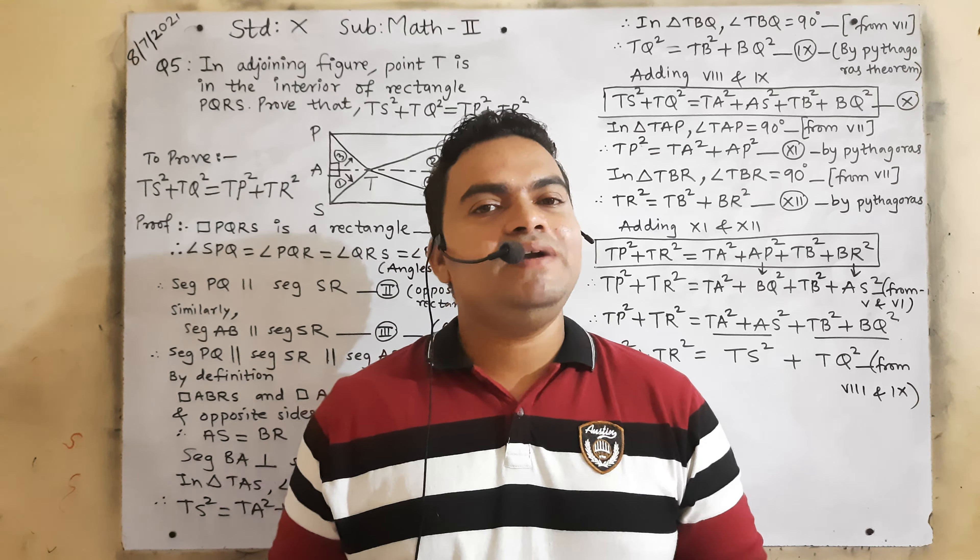Since PQRS is a rectangle, ABQP is also a rectangle and ABRS is also a rectangle. AB is perpendicular on segment PS — so it is 90°. And AB is perpendicular on RQ — so it is also 90°. T is in the interior, so you can see there are four triangles — I have marked them: first triangle, second triangle, third and fourth. This is how we will deal with the requirement of the question. AB is constructed parallel to RS and PQ, and AB is perpendicular to both PS and RQ.